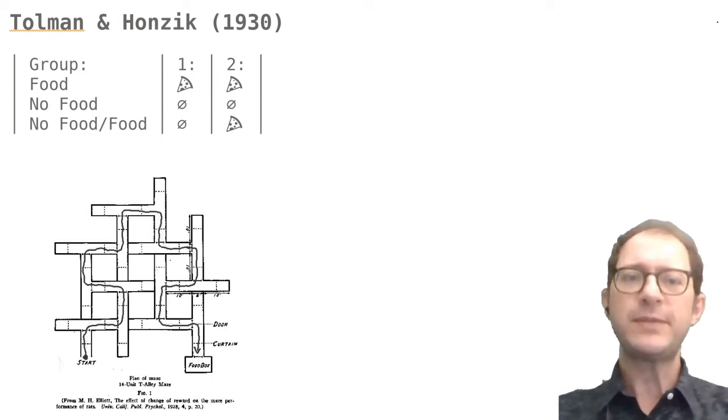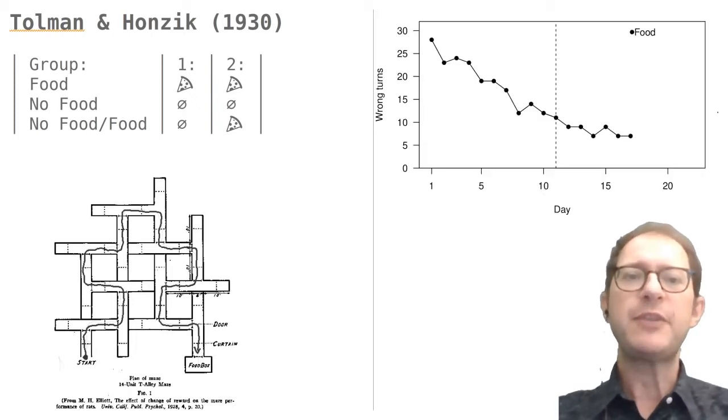Rats in the first group always found food at the end of the maze, and for them there was no difference between the two training phases.